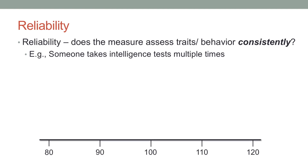Let's say we're testing someone who actually has an IQ of 100. We have that person come in and take a test, and on their first test they get a score that's kind of low — let's say it's a 93. This might reflect somewhat of a true score because it's around 100, but maybe the scale was culturally biased, or maybe they were just a little tired that day.